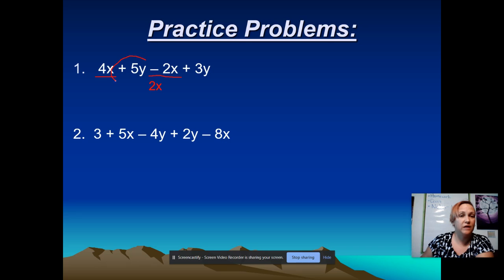Continuing with the problem, I see a positive 5y and I see a positive 3y. Notice that on the x's I underline, but on the y's I circle. That way I can tell the difference between the two. So again, I'm going to think in my head, what is 5 plus 3? And that's a positive 8. So I'm going to write plus 8. And then I'm just going to carry down the letter y. Simplified version is 2x plus 8y.